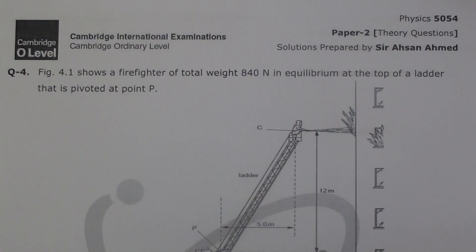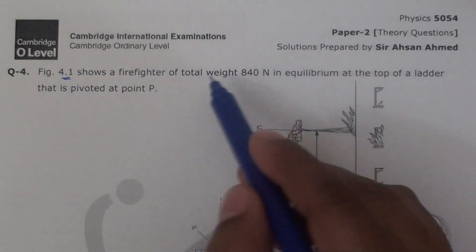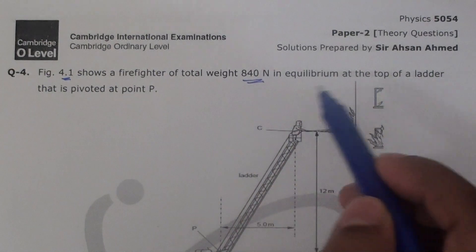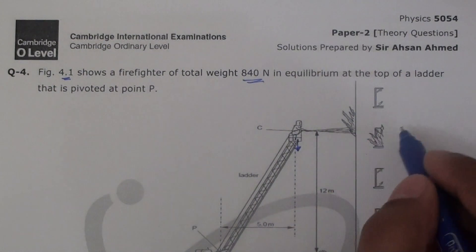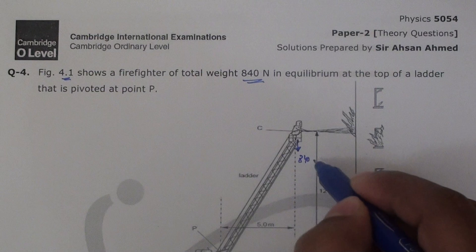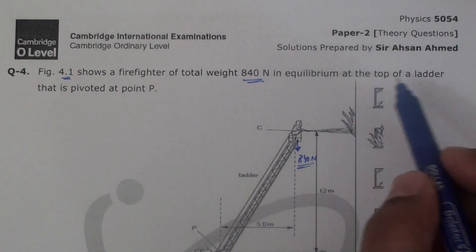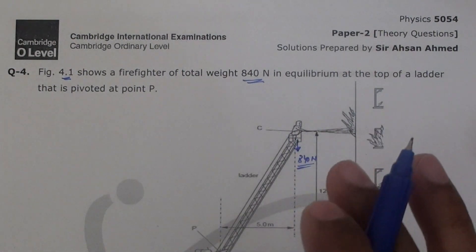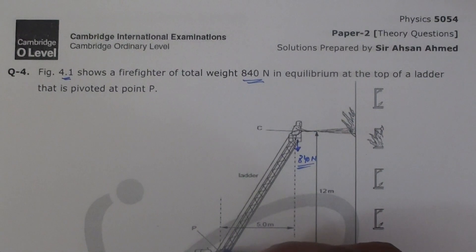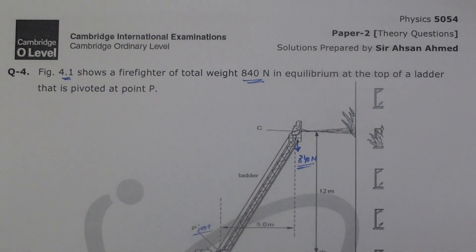The question is from past papers, section 4.1. The figure shows a firefighter of total weight 840 newtons in equilibrium at the top of a ladder that is pivoted at point B. Point B is our pivot, and the question asks us to explain what a pivot is.